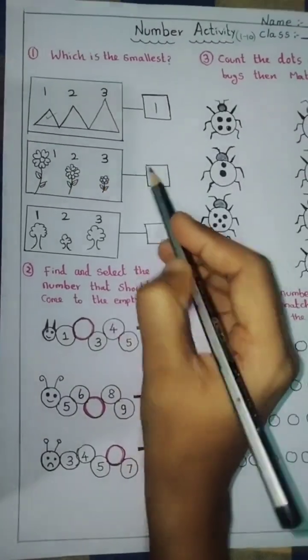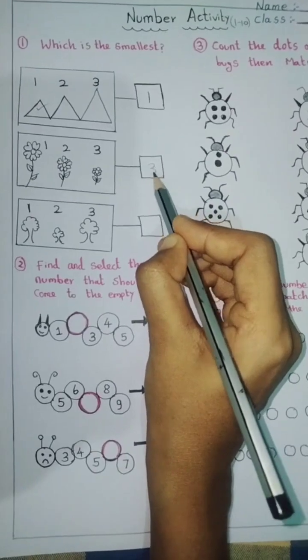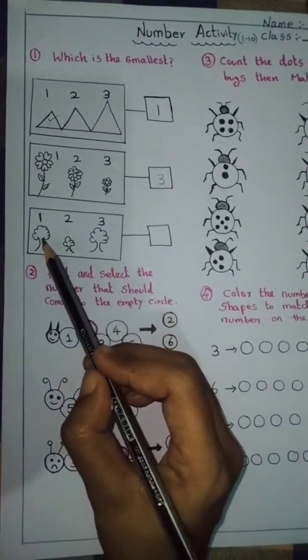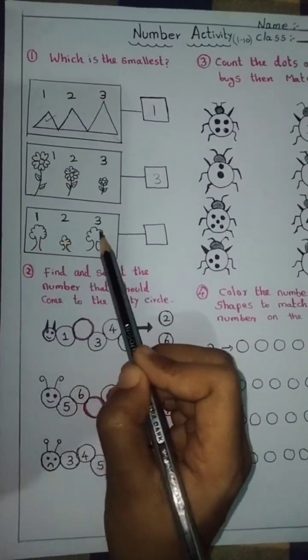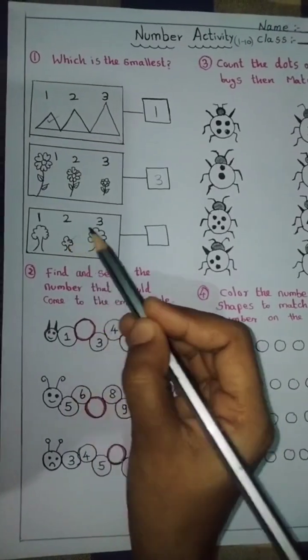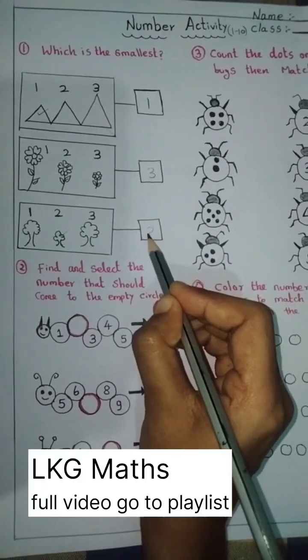2, 3. Number 3 is smallest, right, number 3. Third one is 1, 2, 3. 2 is smallest tree. Number 2, right.